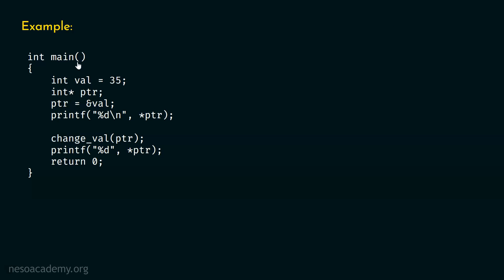Let us assume we have this main function, and execution always starts from the main function. In this main function, I have declared a variable val, and I am assigning this value 35. This is the pictorial representation of variable val, and to this variable I am assigning the value 35.